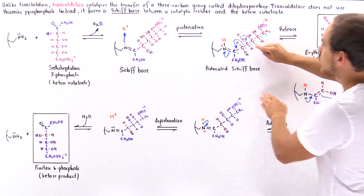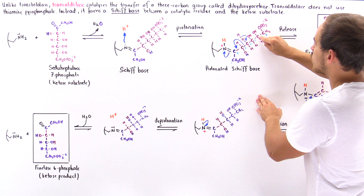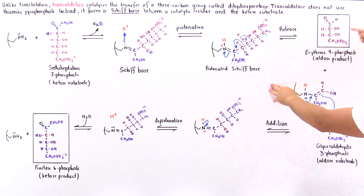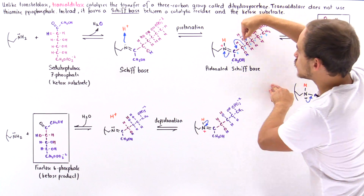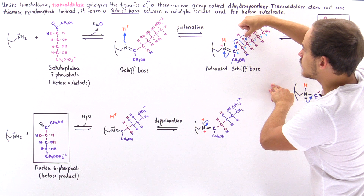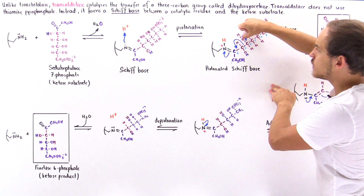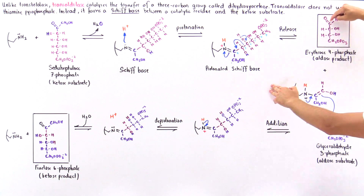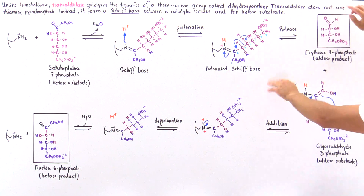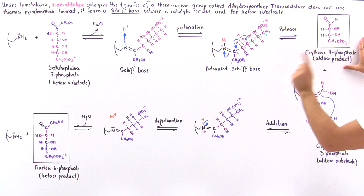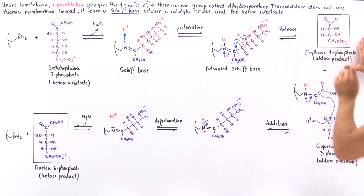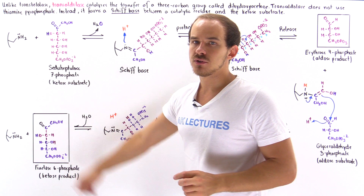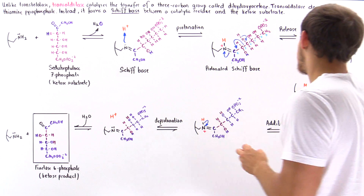In the process, we also generate the four-carbon molecule — the aldose product — in this case erythrose 4-phosphate, with carbon 1, 2, 3, and 4. The pi bond formed between the oxygen and the carbon here corresponds to this pi bond. This is one of the two products that will be formed in this transaldolase reaction.